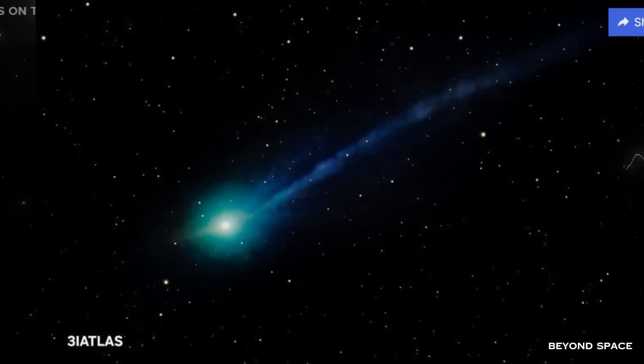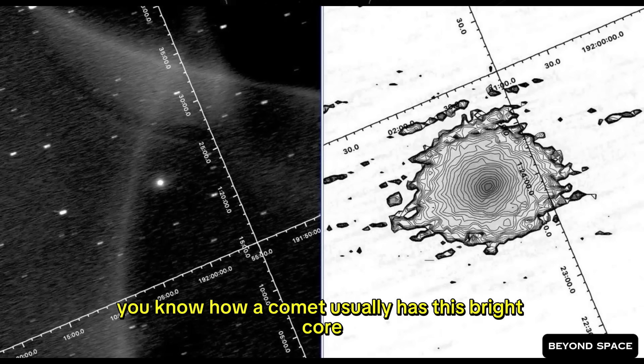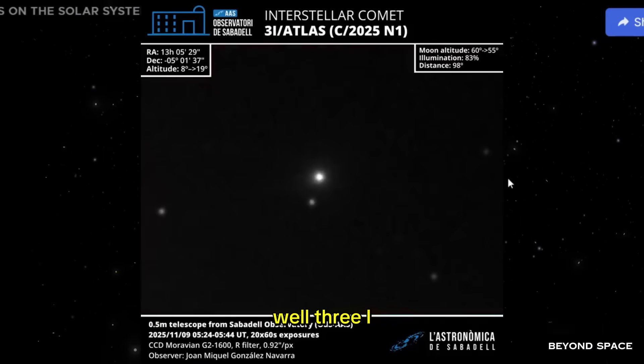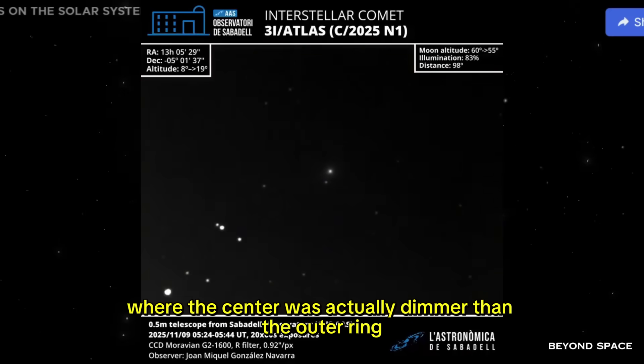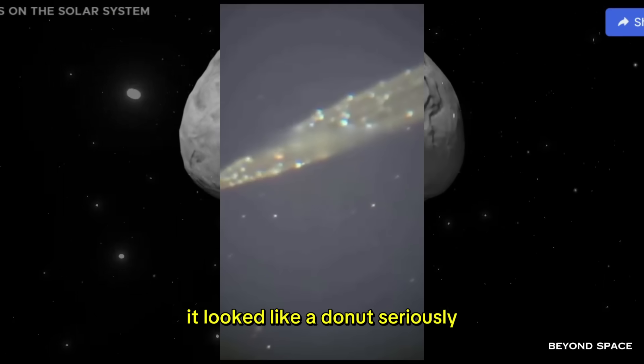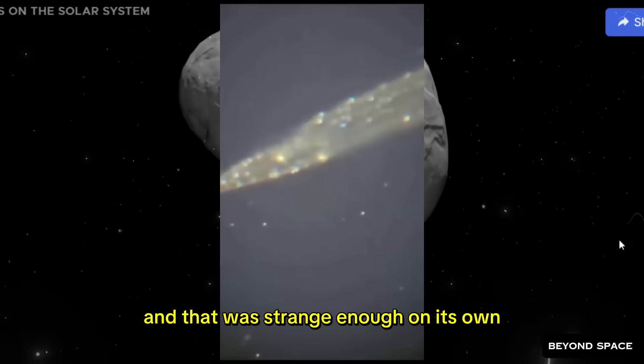So here's where we were yesterday. The big story was this bizarre, hollow appearance in the coma. You know how a comet usually has this bright core, surrounded by a fuzzy cloud of gas and dust? Well, 3i Atlas had developed this weird structure where the center was actually dimmer than the outer ring. It looked like a donut. Seriously. A glowing ring with a darker spot in the middle.